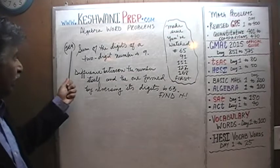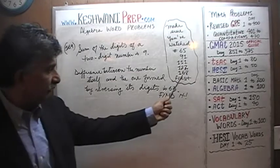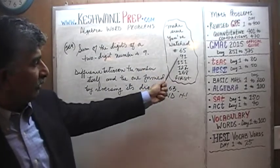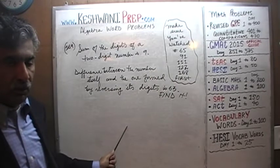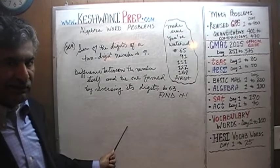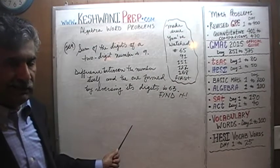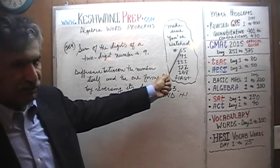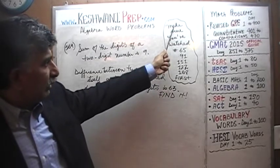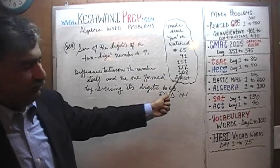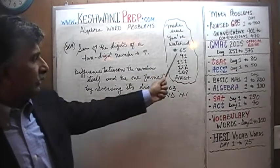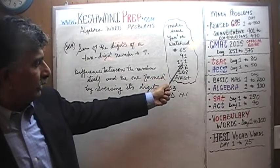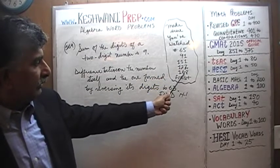If you watched yesterday's video, problem number one hundred and sixty-eight — and you should have watched all of these videos in sequence — the notion of expressing a two-digit number using an algebraic expression is something we learned way back in problem number sixty-five. It's important to watch all of these problems in sequence. It will help you here.